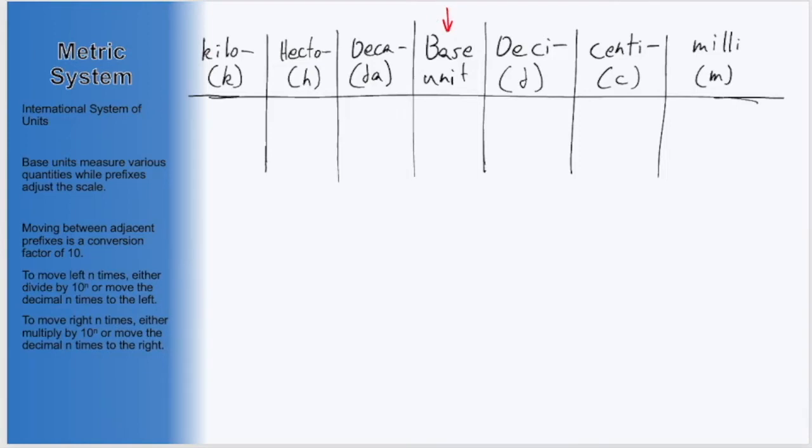which would be where our normal grams, meters, and liters would be. As we go to the left, we will be moving towards the larger units. And as we move to the right, we'll be going towards the smaller scale units.